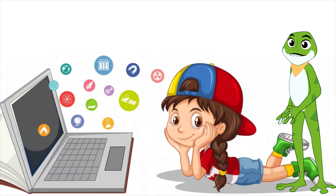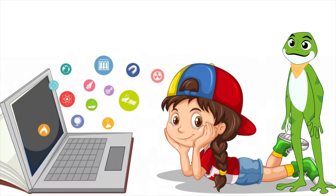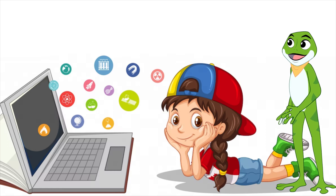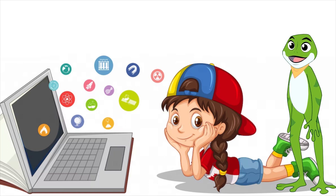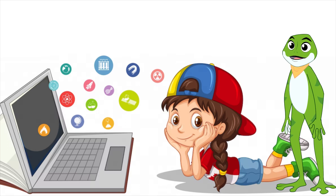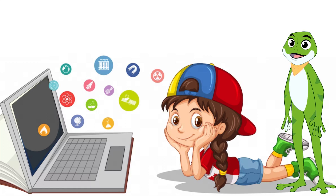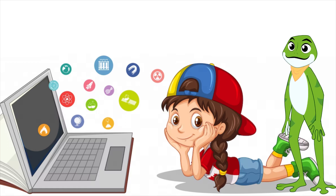But how do you use software? Well, you need something called an operating system on your computer. This is like the boss of your computer that tells all the other programs what to do. When you want to use a software program, you click on an icon — like a little picture — on your computer screen, and the operating system starts up the program for you.